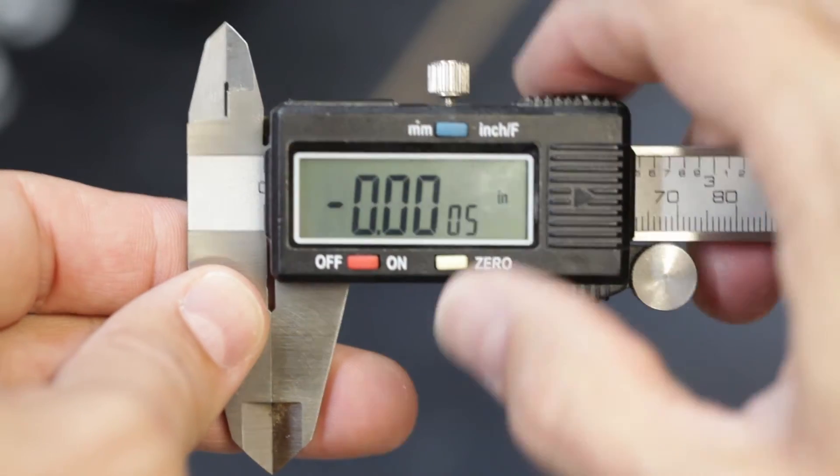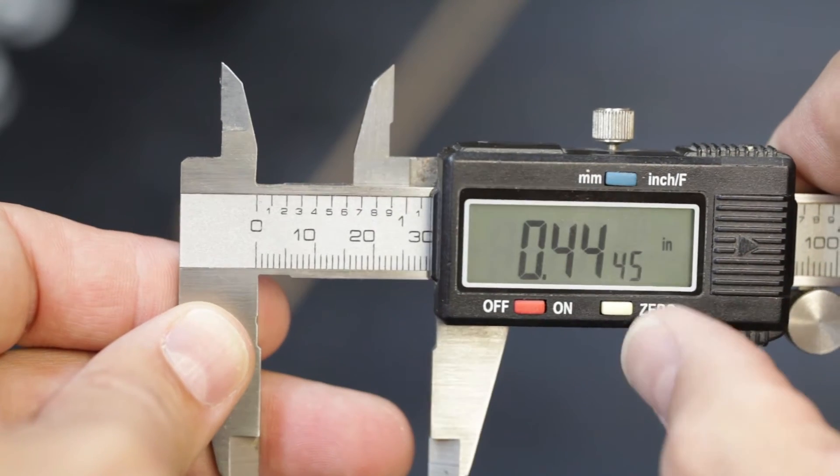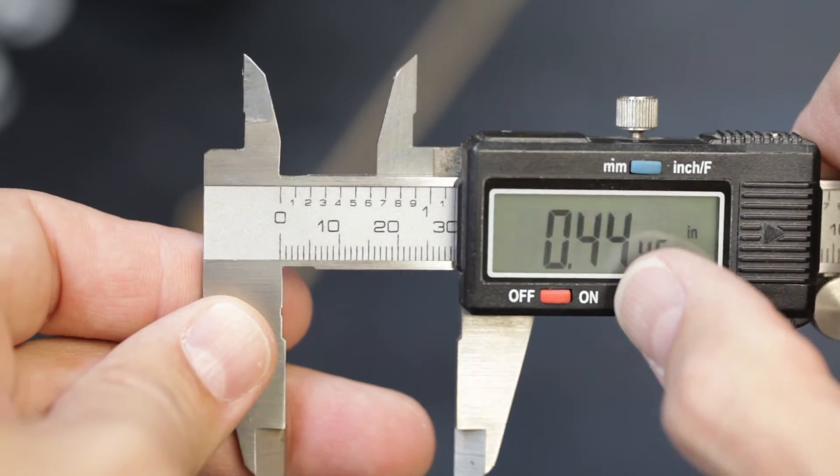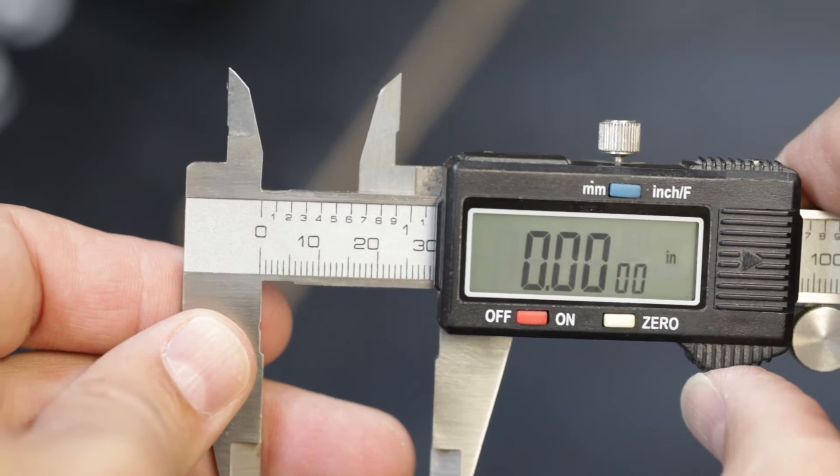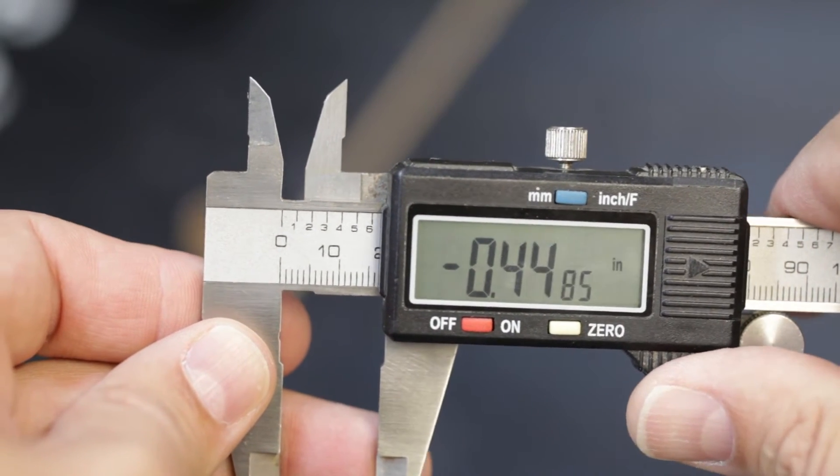They have a zero button on them. So you can zero it out, either close the jaws, zero it out, and then you get an accurate measurement. Or you can use it to get the difference between two measurements. Take one measurement, zero it out, take another measurement, and that gives you the difference between the two sizes. That can be really handy.